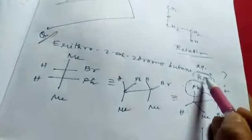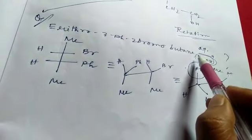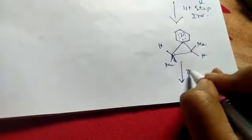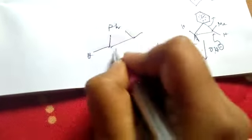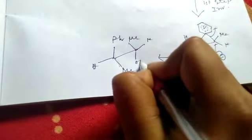And in the second step, the incoming nucleophile, incoming nucleophile OH minus. Here, KOH is given. So OH minus acts as incoming nucleophile and attacks the carbon center to push out the neighboring group. And the product is like that. Draw it here, product is like that: phenyl, phenyl H-Me, and this is Me-H-OH.